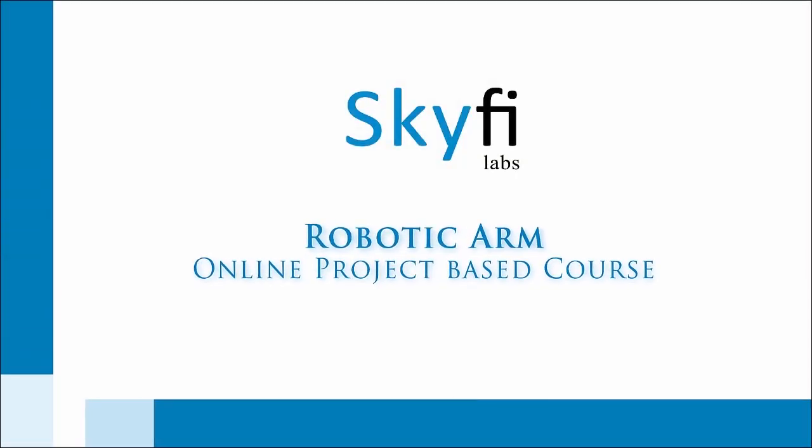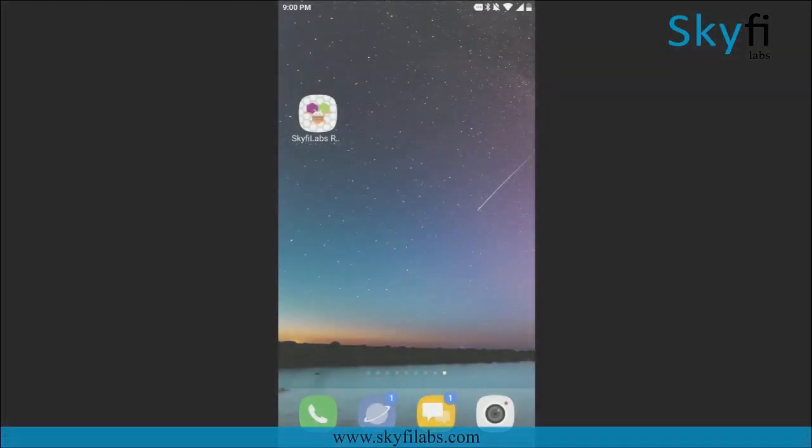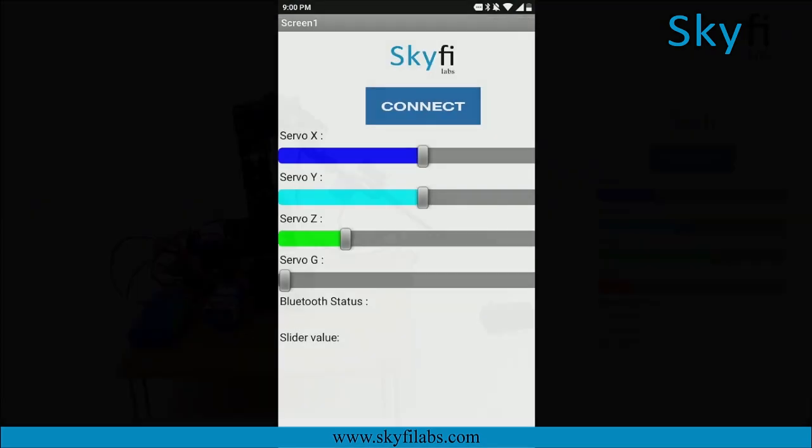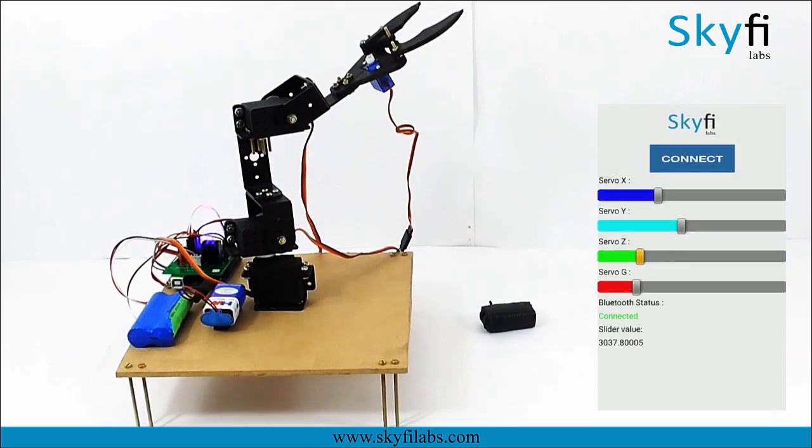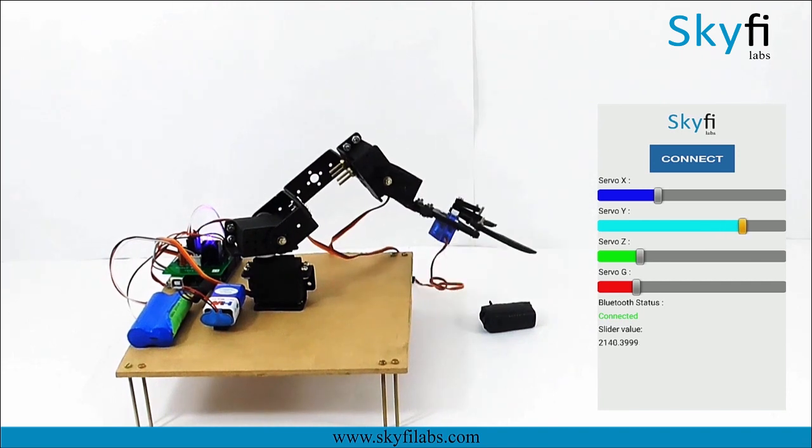In this course, you will build a robotic arm with 3 degrees of freedom that you can control with your mobile phone. The robotic arm can pick and place objects and helps you get started with industrial robotics.